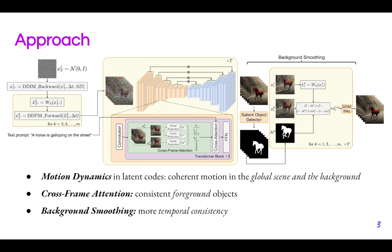Second, we introduce the cross-frame attention mechanism which modifies the self-attention to take keys and values from the first frame features. This allows better foreground object consistency.